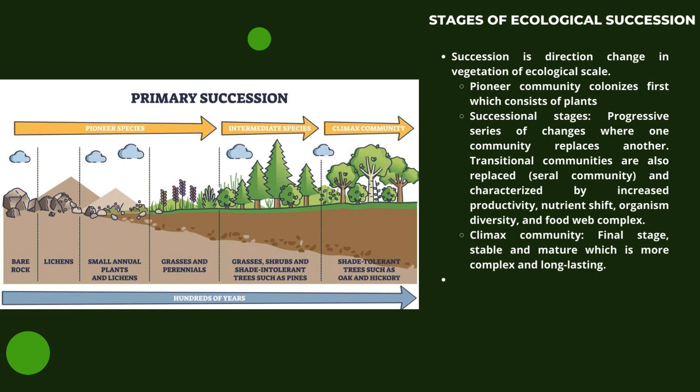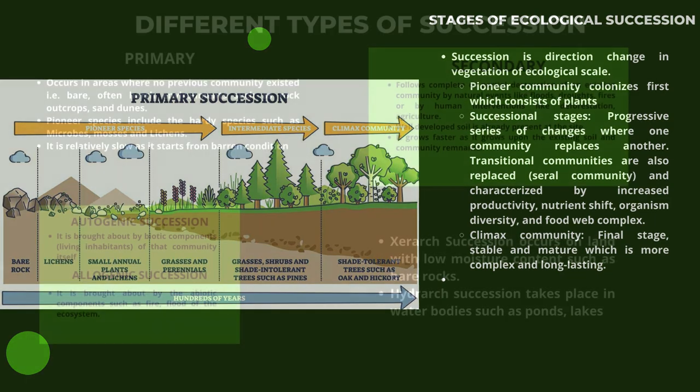Transitional communities are also replaced — the seral community — and are characterized by increased productivity, nutrient shift, organism diversity, and food web complexity. Finally, the climax community is the final stage: stable and mature, which is more complex and long-lasting.